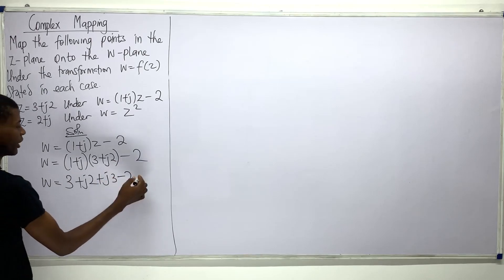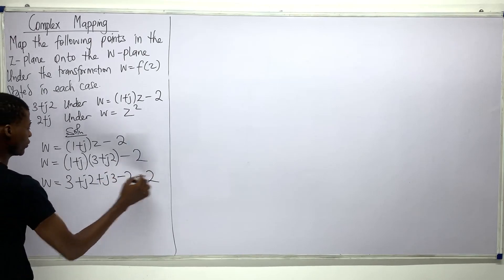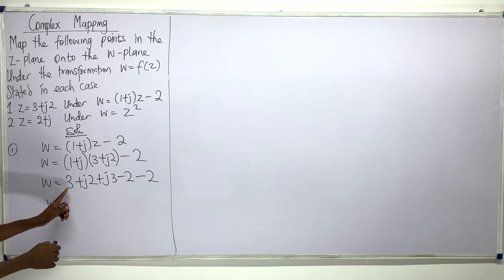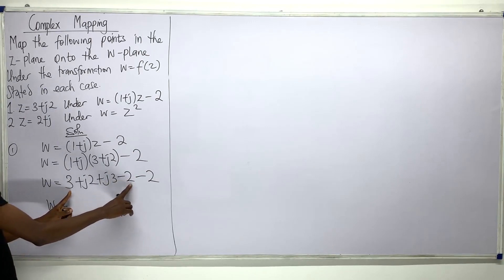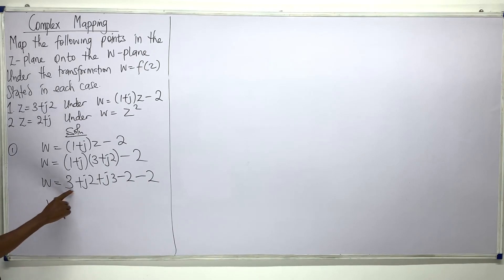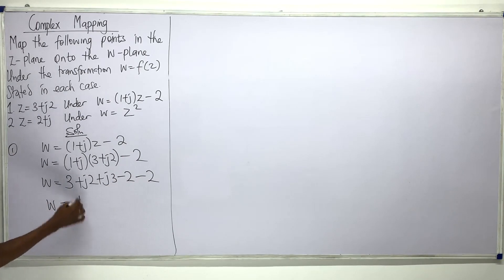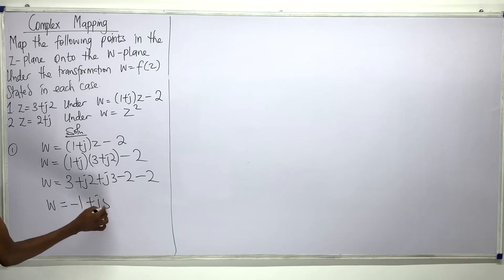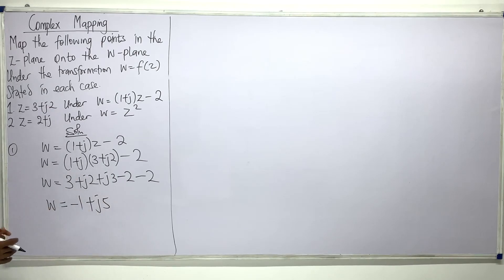So 3 − 2 = 1, and 1 − 2 = −1. Then j2 + j3 gives us j5. So w = −1 + j5. That's our answer for question one.